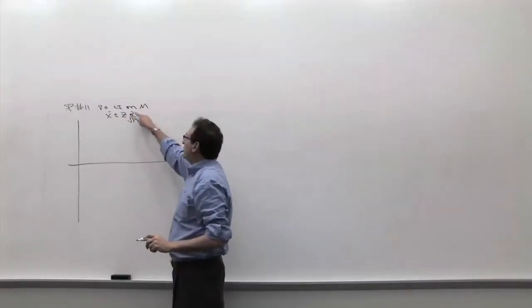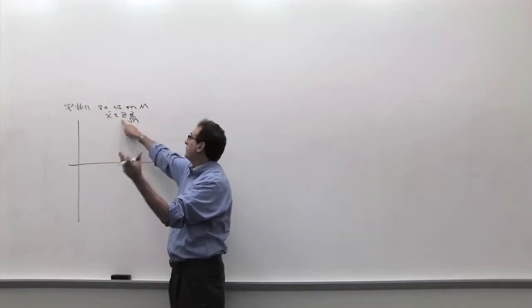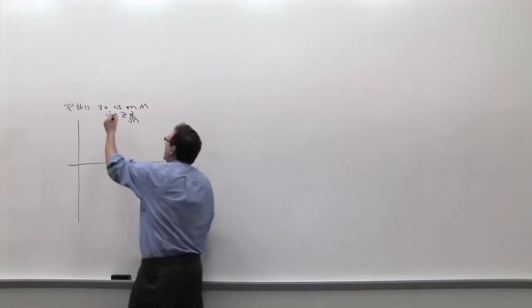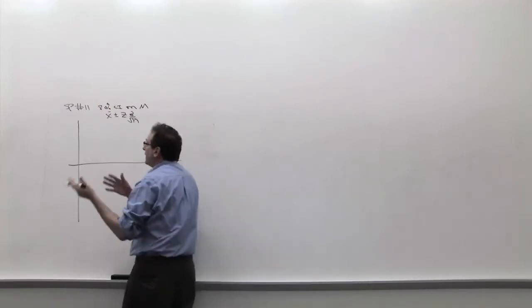Where n is 5, sigma is 2.87, and z when you look it up at 10% on the left side of the table, giving you 80% in the middle, was 1.28. After all is said and done, everybody got a different answer.